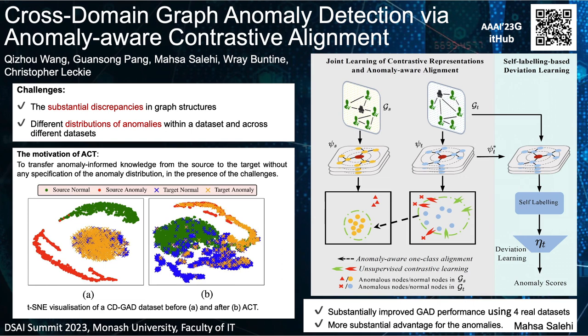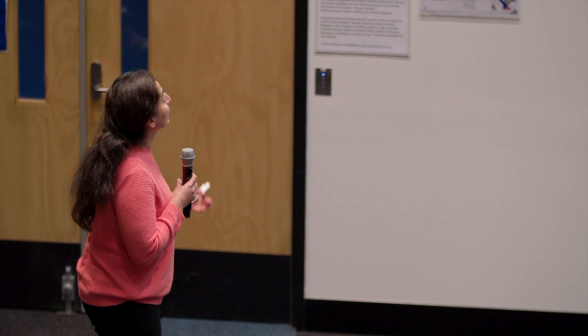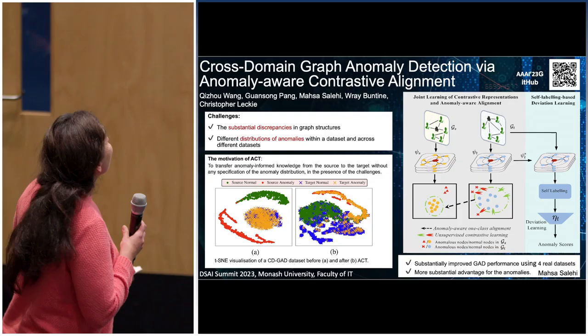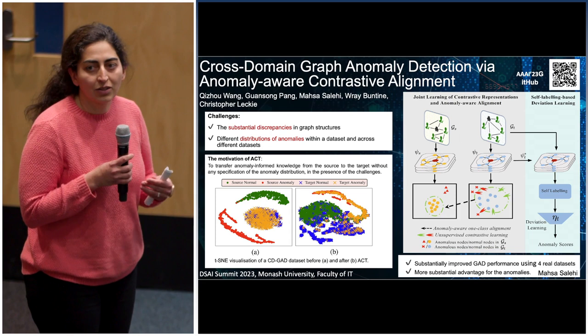I'm going to present this paper, which is majorly done by my PhD student in collaboration with SMU and the University of Melbourne. It's about finding anomalies in graphs — for example, in a citation network, finding an unusual author. It focuses specifically on graph anomaly detection.